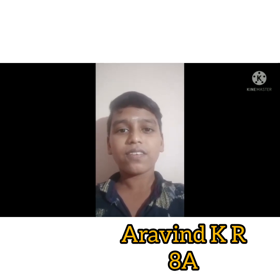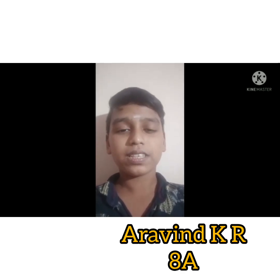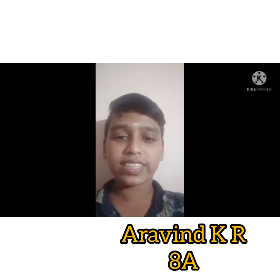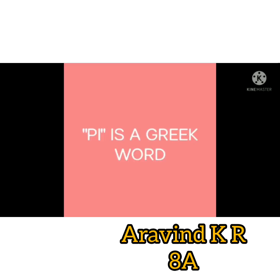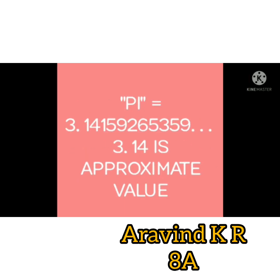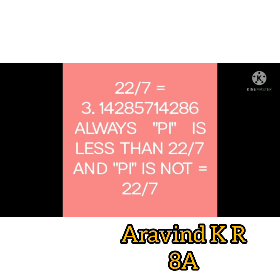No one can determine the exact value of pi. The answer of circumference divided by diameter is equal to a constant number — pi. 3.14 is an approximate value. Pi is a Greek word and is also known as Archimedes' constant. Pi equals 3.14159265359 and so on — we can't find the exact value. Pi has an infinite number of decimal places. And 22 by 7 is also not the exact answer, because pi is always less than 22 by 7; pi is not equal to 22 by 7.